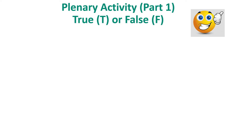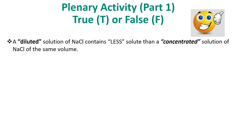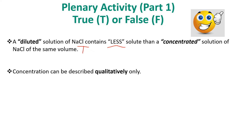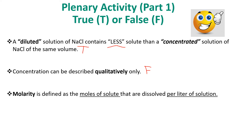We have reached the end of Part 1. Let's solve three true or false questions. First: a diluted solution of NaCl contains less solute than a concentrated solution of NaCl of the same volume — True, diluted means less solute. Second: concentration can be described qualitatively only — False, because we also have mathematical representations. Third: molarity is defined as moles of solute dissolved per liter of solution — True, moles over liters of solution.